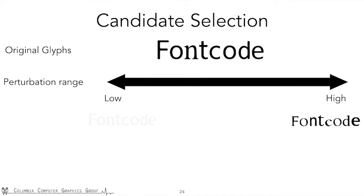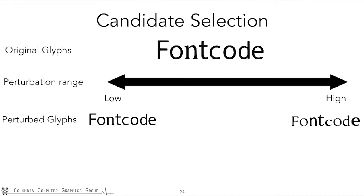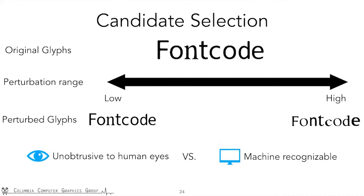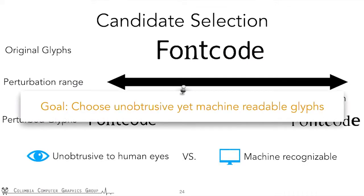If we perturb glyphs largely, they will be easily recognized by the computer, but also easily noticed by our eyes. On the other hand, if we perturb glyphs too subtly, they will become hard to recognize by the computer. So we need a balance — the balance between human vision and computer vision. We want to identify a set of glyphs that are unobtrusive to our eyes but recognizable by the computer.